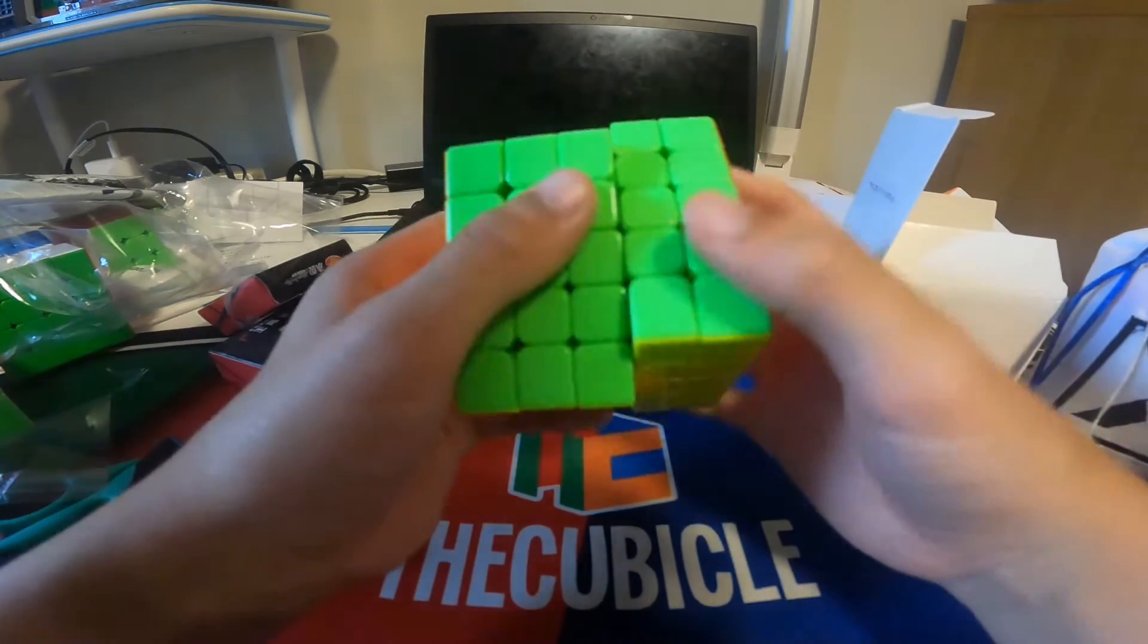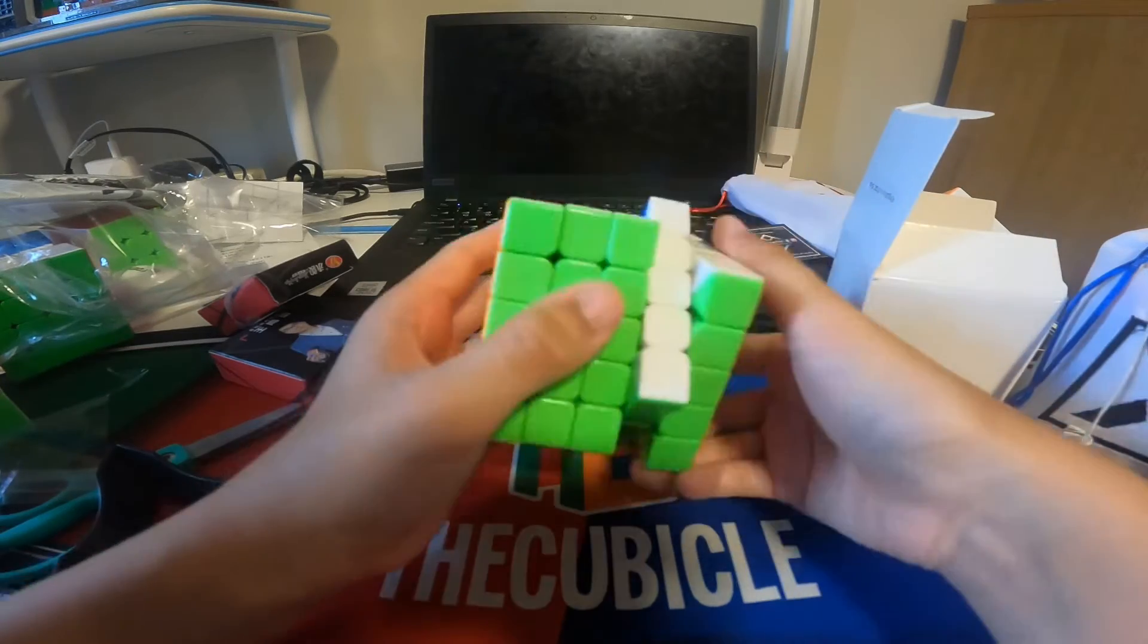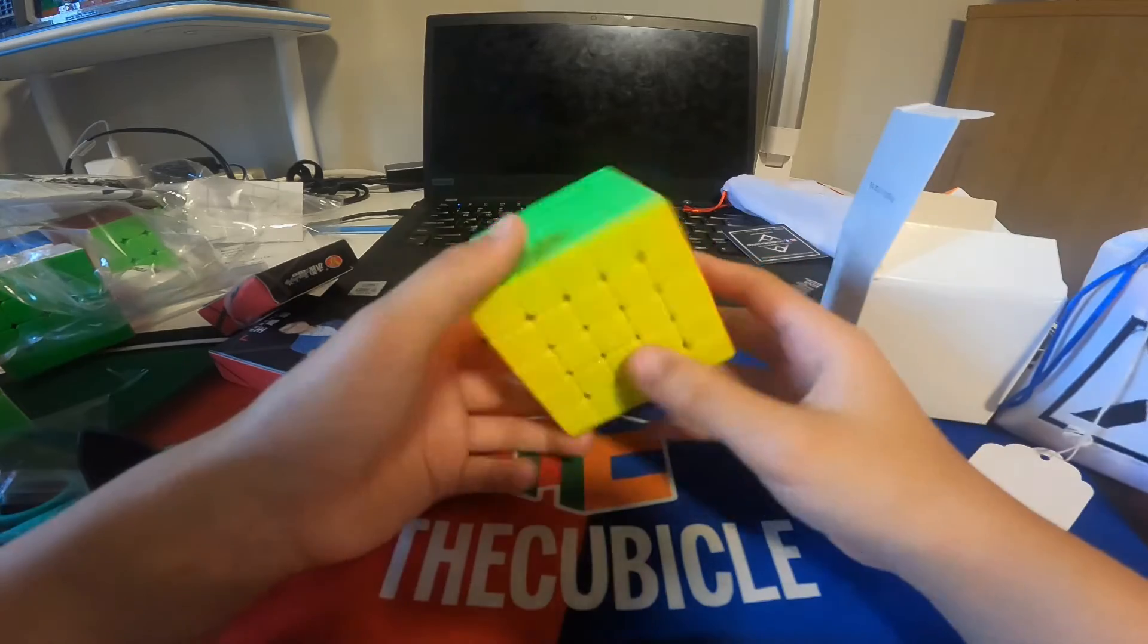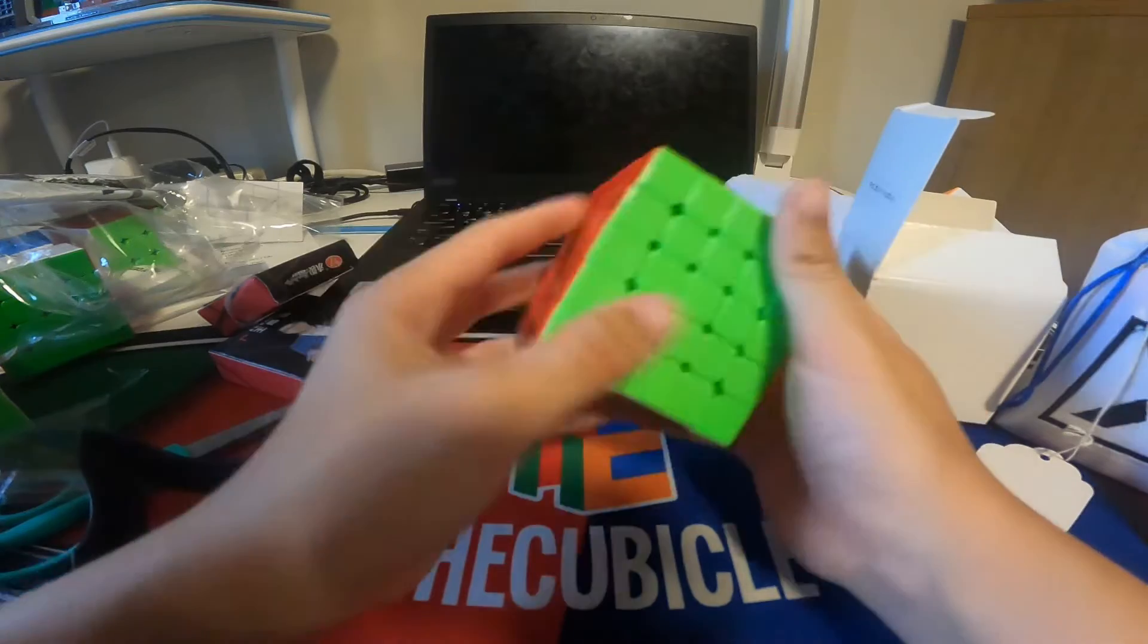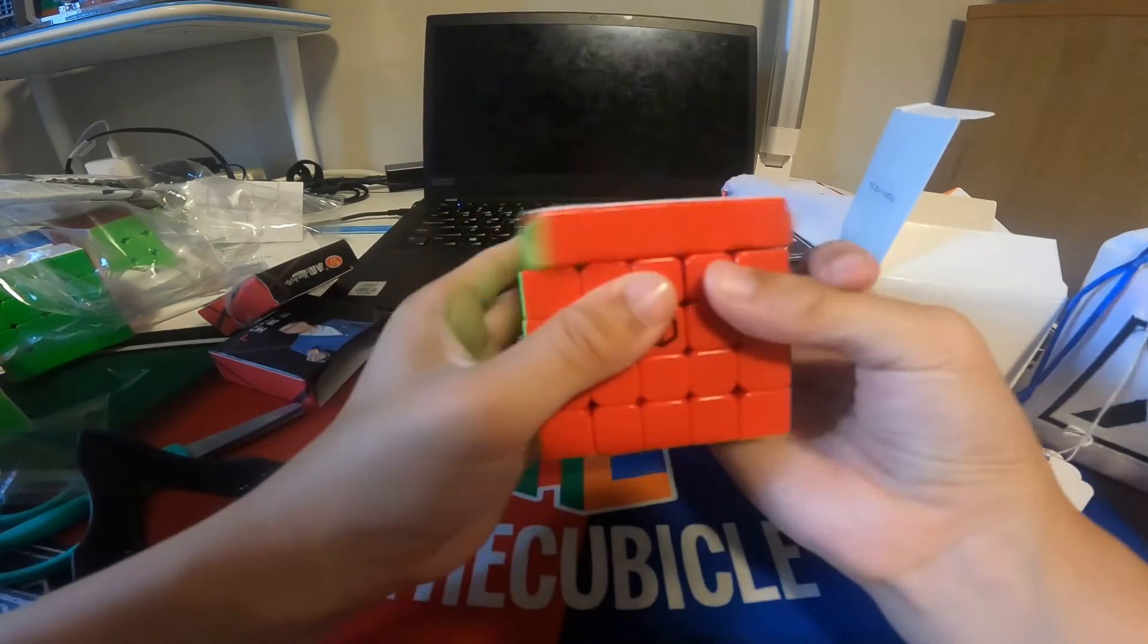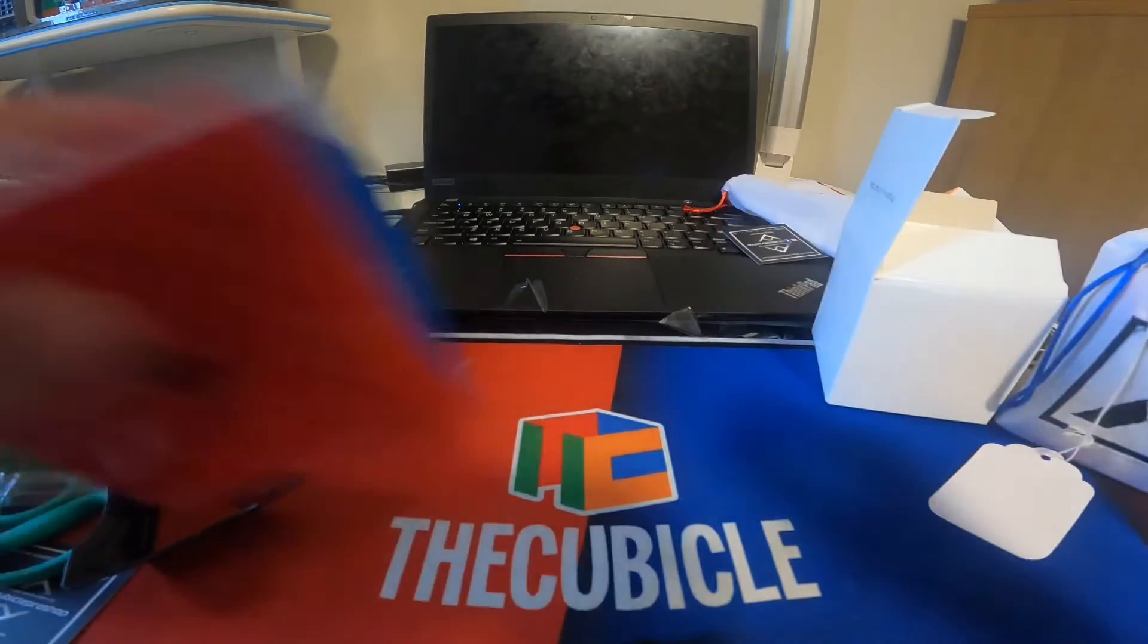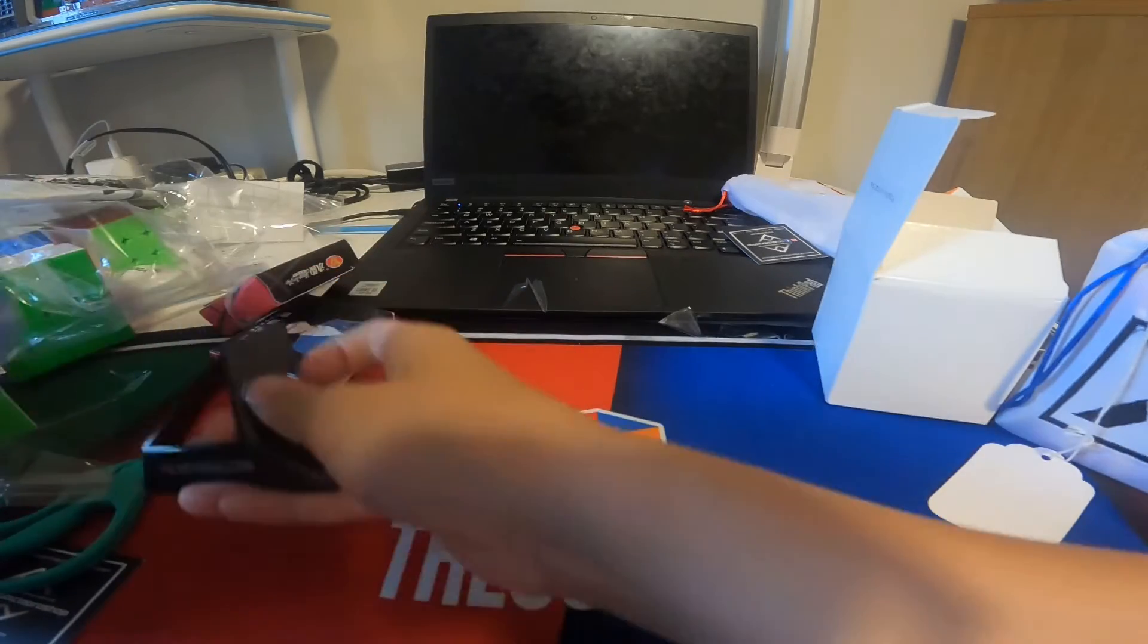But yeah, I would recommend if you're starting out with 5x5. I would really recommend this cube, like the MGC 5. It's probably the best 5x5 out there. And it's really cheap, also. So moving on from that, is the last thing. The Angstrom MGC 6x6.